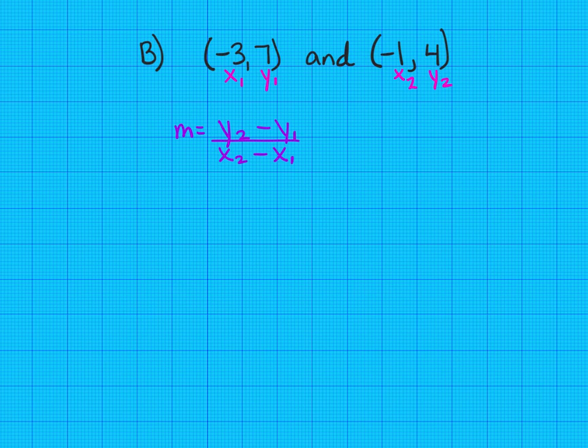And now we're ready to just plug into our formula. Y sub 2 is 4. Make sure you use the minus from your formula. And then y sub 1 is 7. X sub 2 is -1. Use the minus from your formula. Then x sub 1 is -3. Be careful here. A very common error is for students to only write one negative sign. Instead of writing minus a negative, they might say just minus 3, and that is not correct. So be very careful.